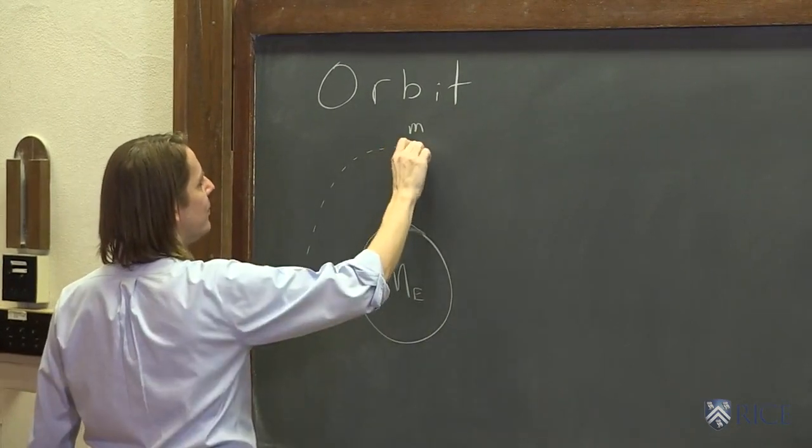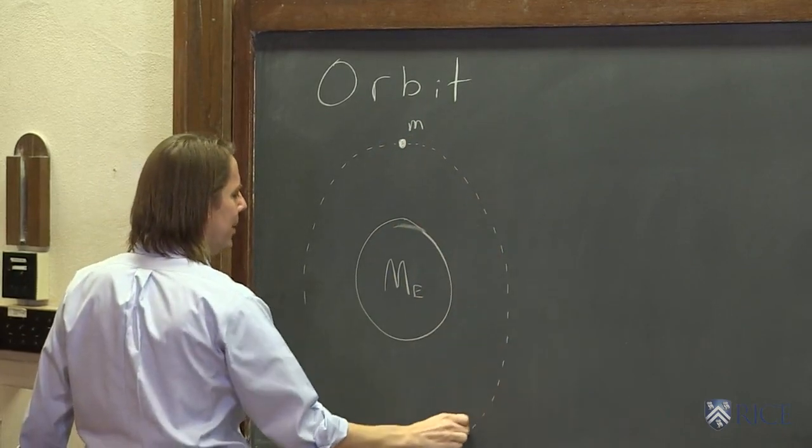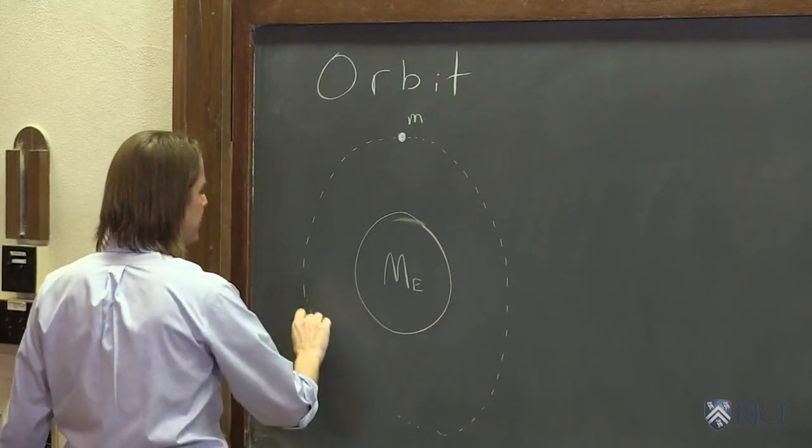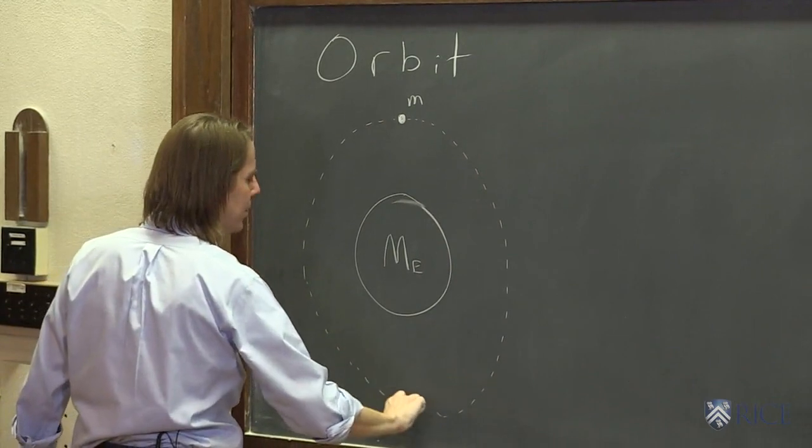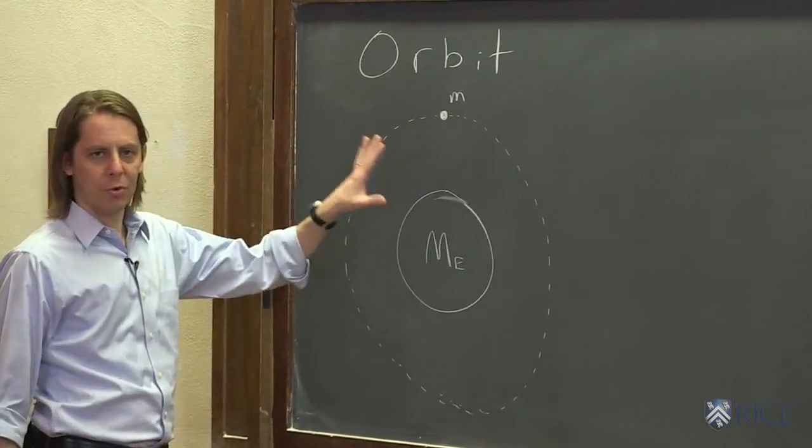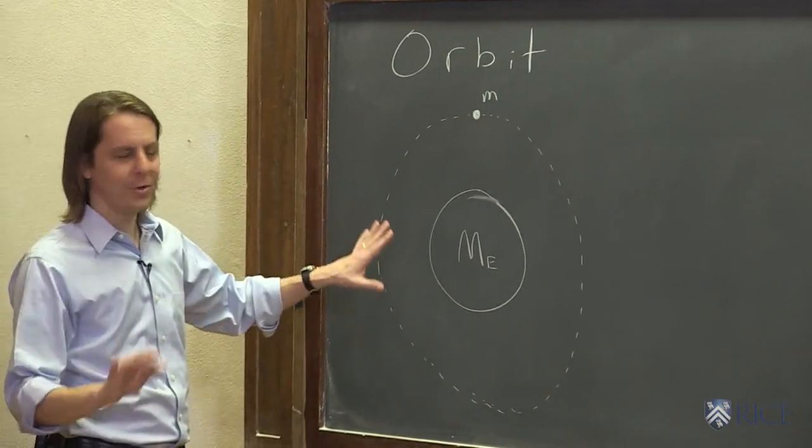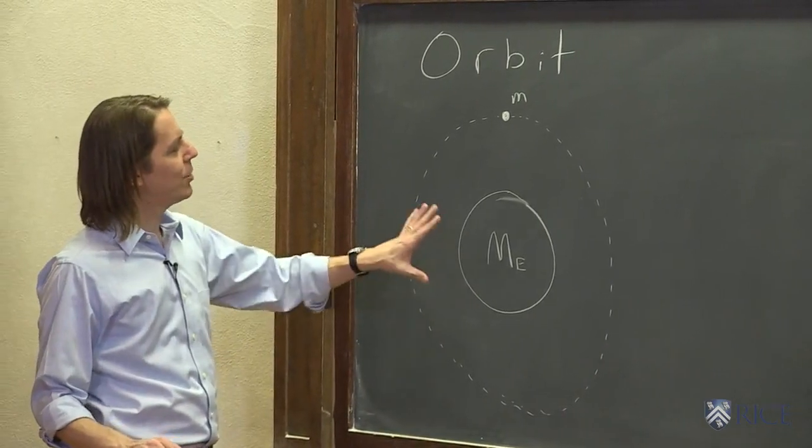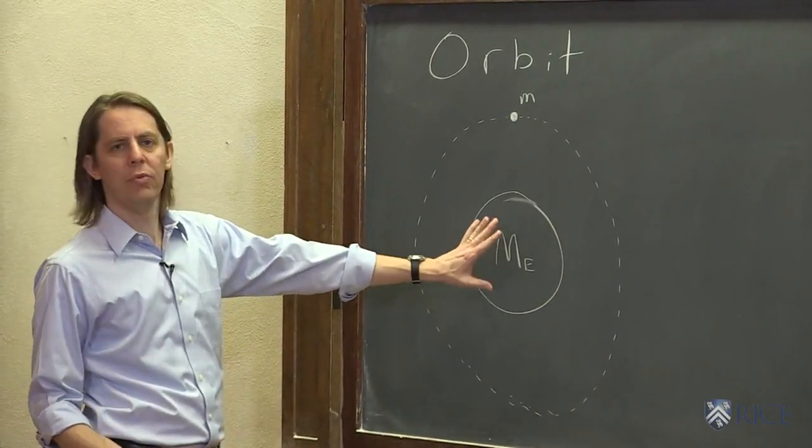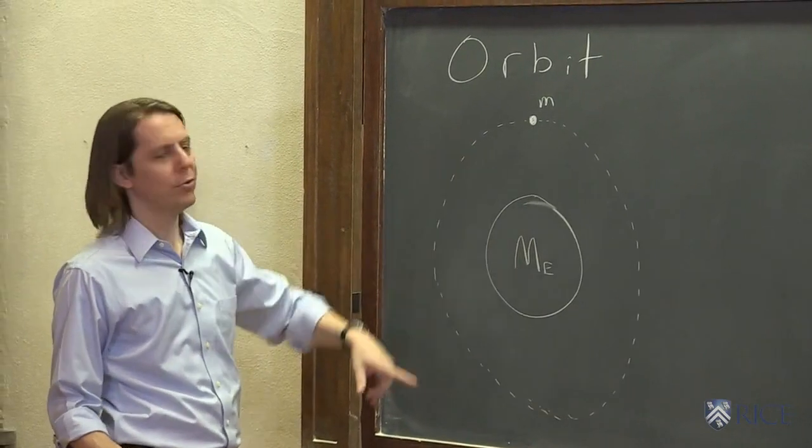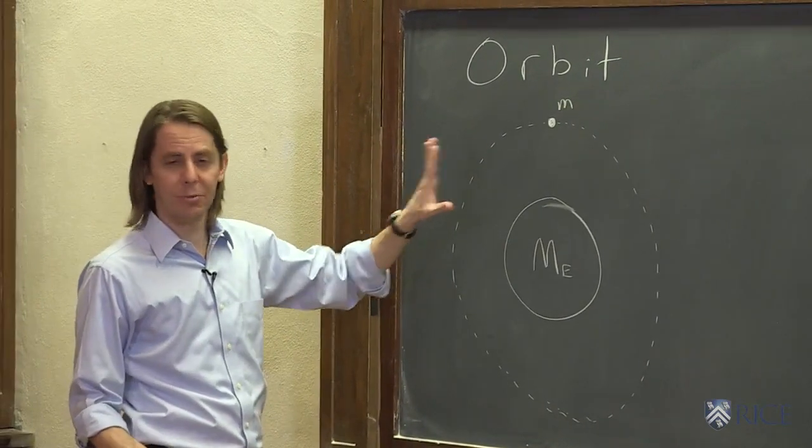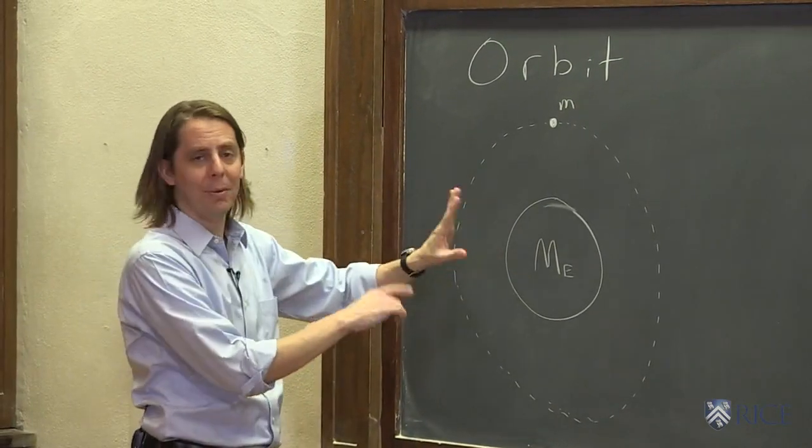Now orbits can be very interesting and complicated but we're going to start with just simple orbits and by simple I mean perfect circles. We're not going to get into elliptical orbits yet and also we're going to pretend that the large mass doesn't move. The large mass just sits in the center and the little mass goes around it and that's also not completely true. They actually both orbit around a common point.